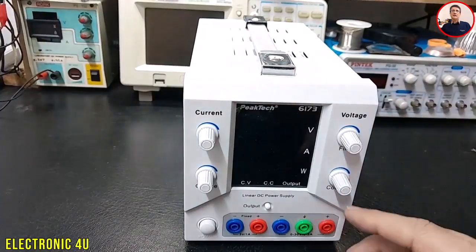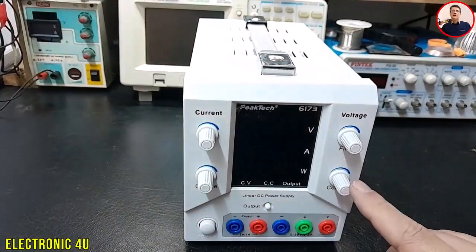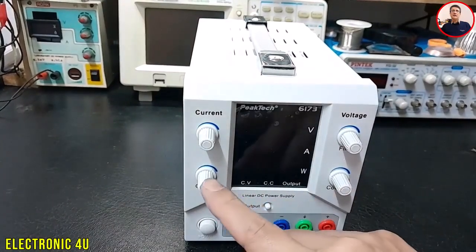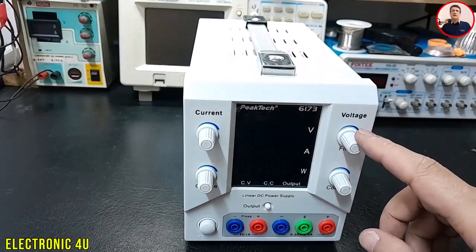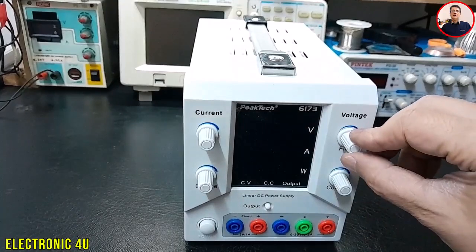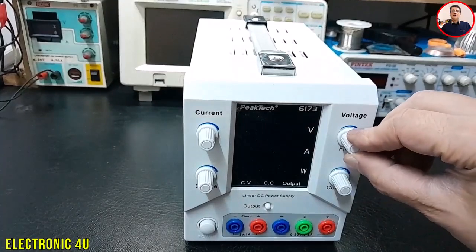To adjust the output, there are two knobs - one for voltage and one for current. Each has a coarse and a fine adjustment. Turning these knobs is smooth and precise, and very enjoyable.